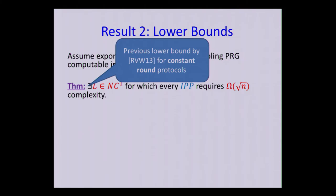I should note that RVW already had a lower bound, but their lower bound only worked for constant round protocols, and in fact, the quality of their lower bound deteriorated with the number of rounds. Our result is sort of independent of the number of rounds. This can be square root of n rounds for all we care.